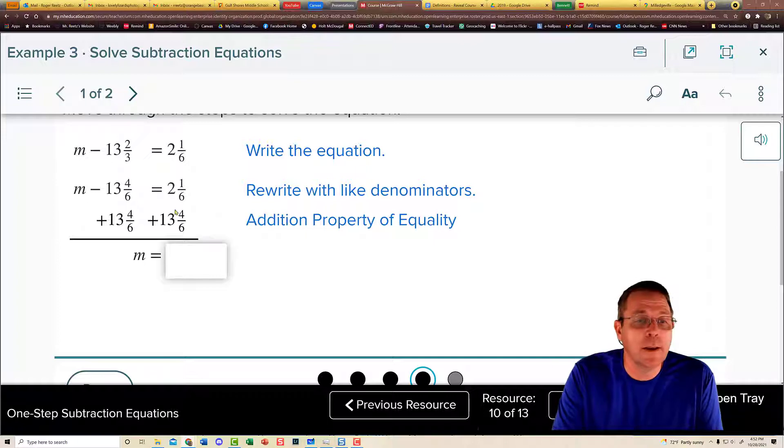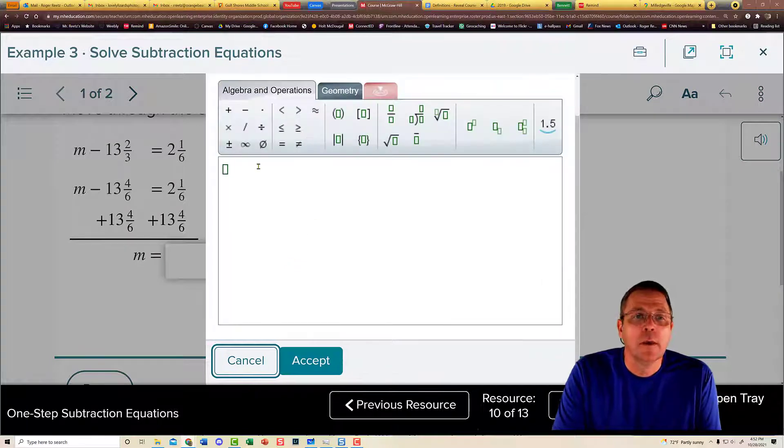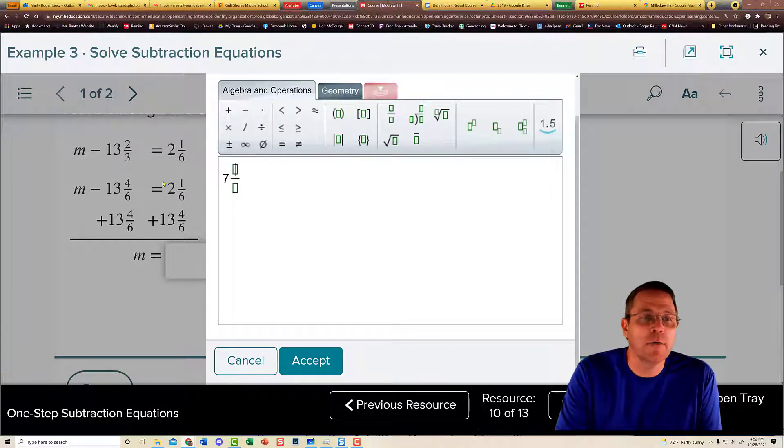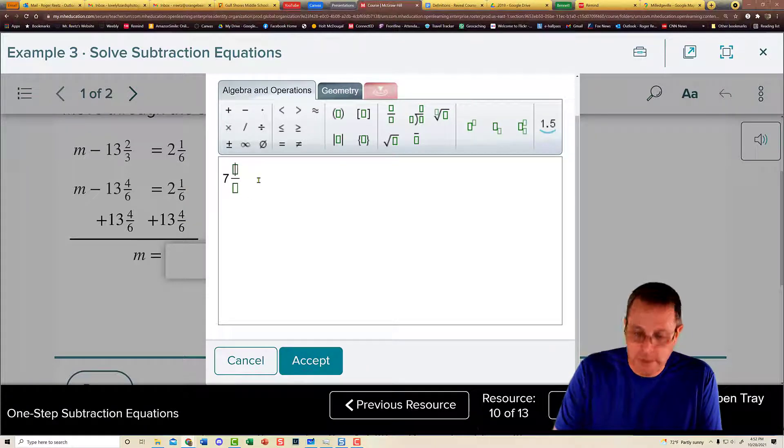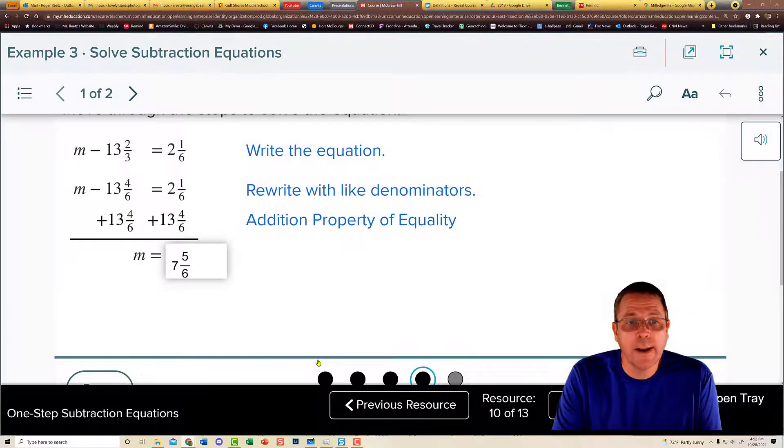And when you're all said and done with that, well, let's see. That one would end up being, I have 13 plus 2. That is going to end up being 7. And then in the fraction side of it, I have 1 sixth plus 4 sixths. That's going to end up being 5 sixths. So this one ended up adding very nicely.